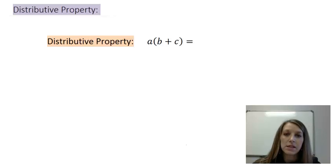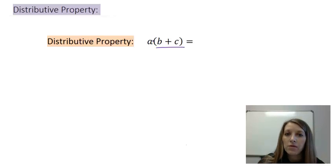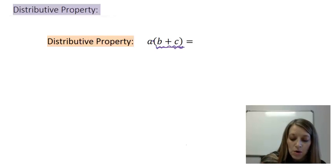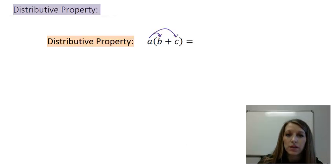The next property is the distributive property. And it actually combines multiplication along with addition. It kind of goes back to our rules of order. PEMDAS says that we should officially work the inside of our parentheses first and then move on to the multiplication in this problem outside of that. But sometimes that's just not possible. Sometimes the inside of our parentheses we're not able to combine, but we still want to be able to simplify it.